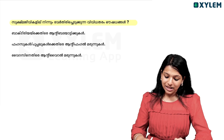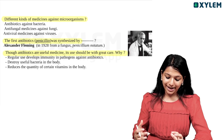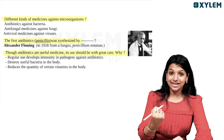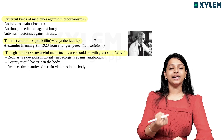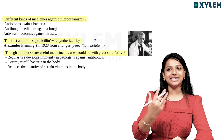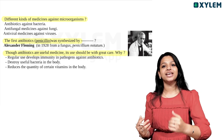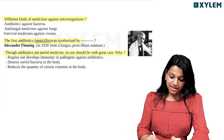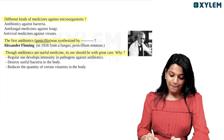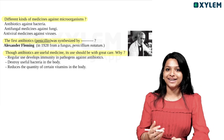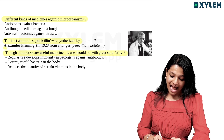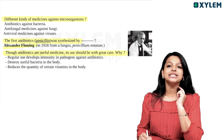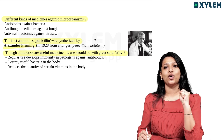This is the first antibiotic, penicillin, synthesized by Alexander Fleming using Penicillium notatum in 1928.